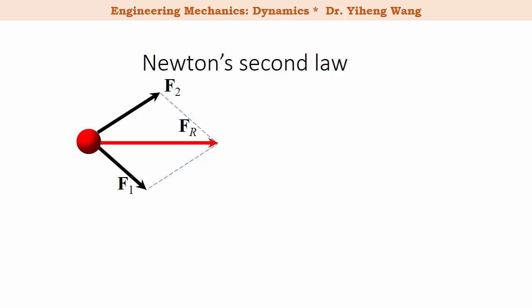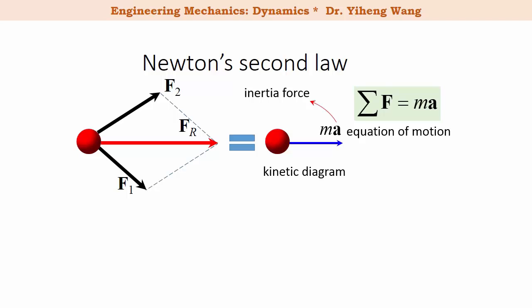But if the forces acting on the object has a non-zero resultant force, then the resultant force equals the mass of the object times acceleration. This is known as the equation of motion. It can be represented by a kinetic diagram, and the vector m a is called the inertia force, since it is equivalent to a force vector.